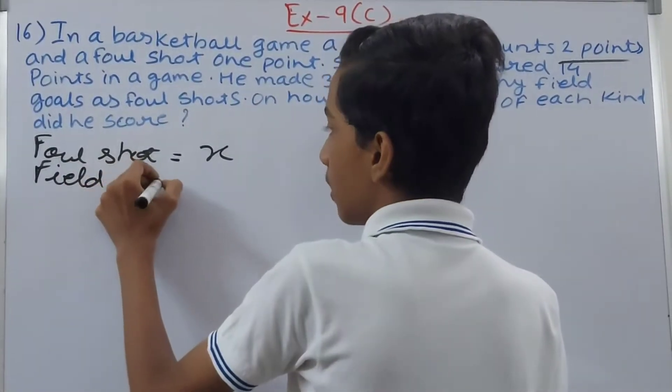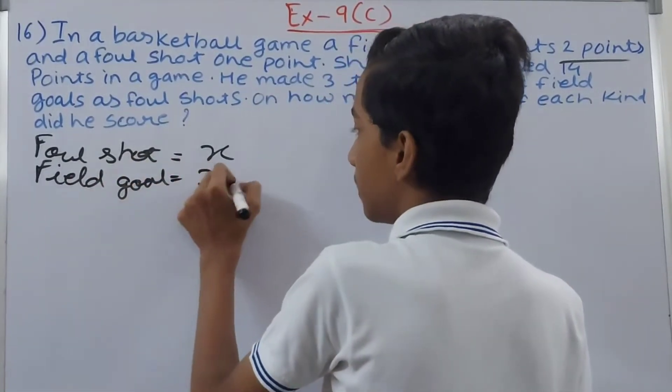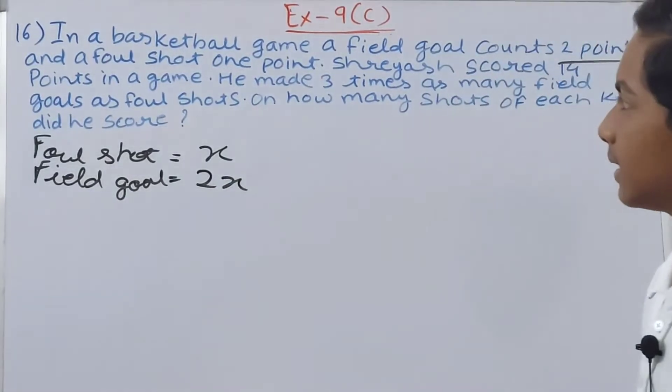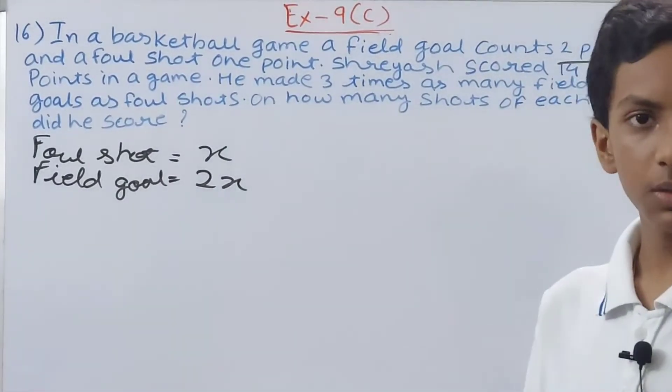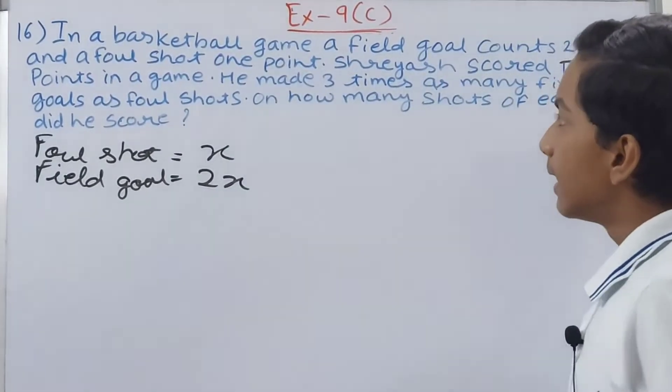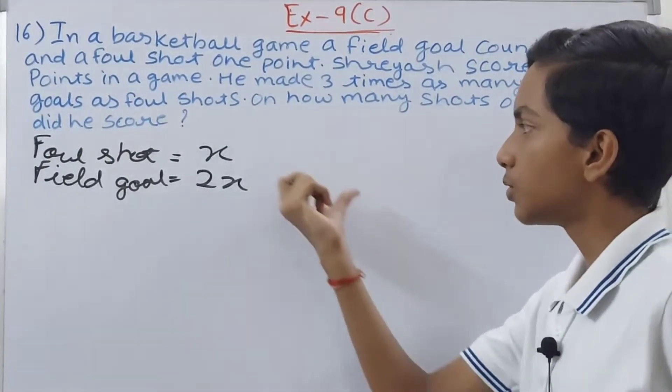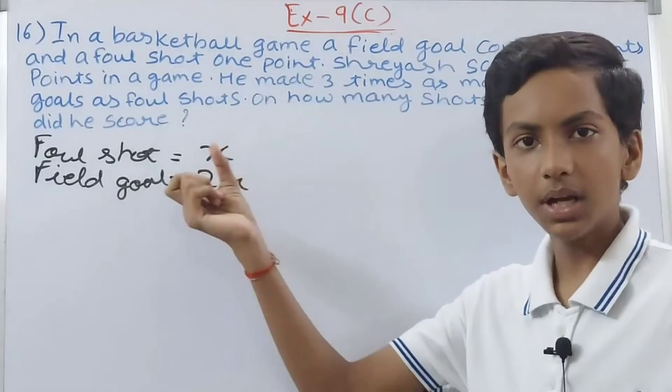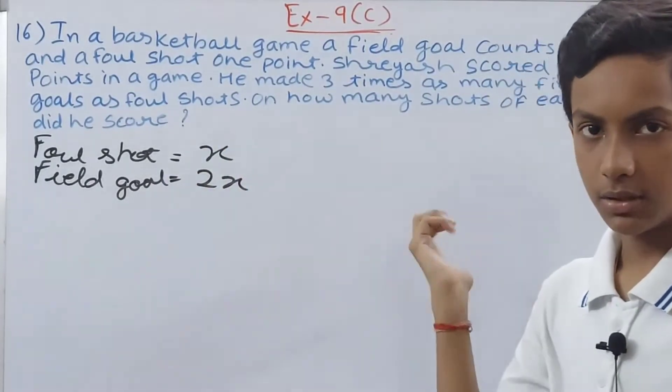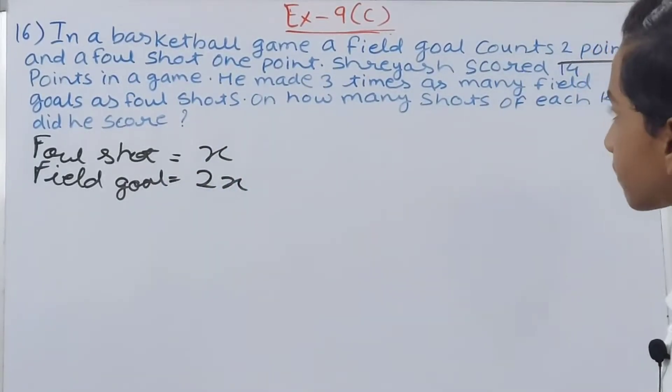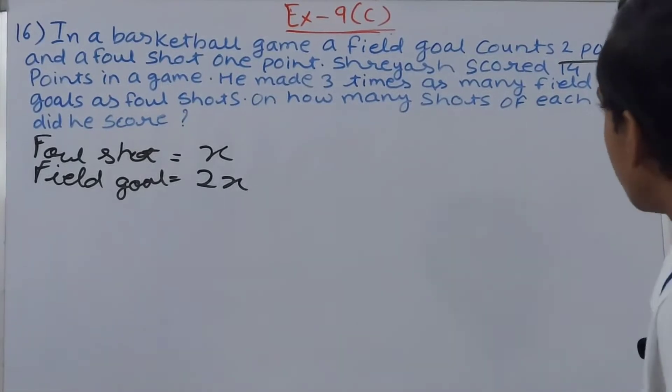It says he made 14 points in the game, and he made three times as many field goals as foul shots. So 2x will be multiplied by 3, plus x for the foul shots.